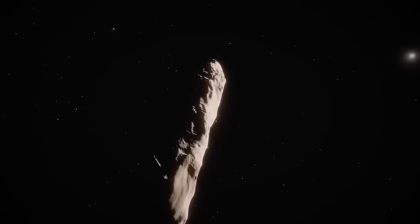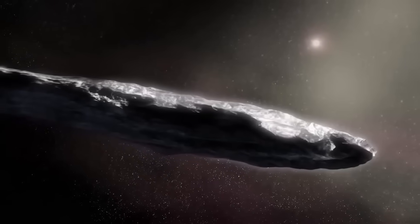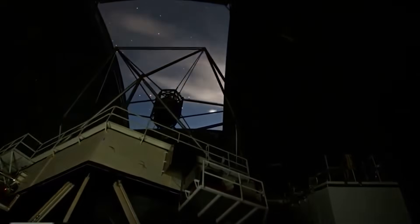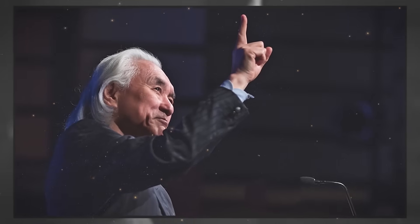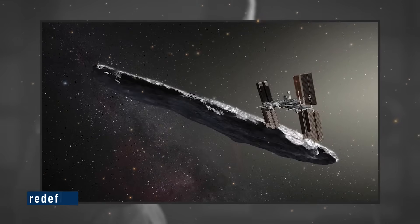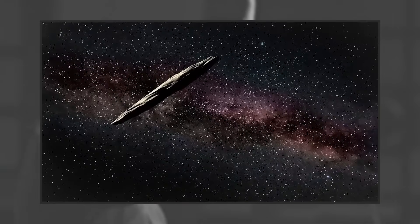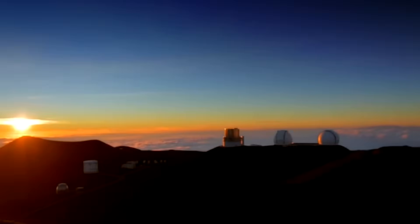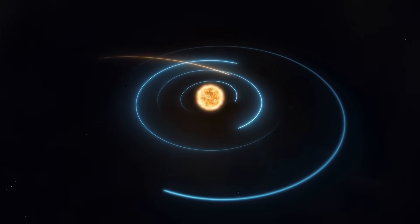Even in its silence, 3i/ATLAS leaves clues. About where it came from. About what formed it. About how small our knowledge still is. Soon, it will pass Mars, fade into the distance, and vanish into interstellar dark. But its memory will remain. In archives. In data models. In headlines. In astronomy, every blur is a signal. And sometimes, the hardest objects to define are the ones that redefine what we think we know. 3i/ATLAS will soon vanish forever. But its blurred image leaves behind more questions than answers. Did a Chinese observatory reveal what NASA wouldn't? Or is the truth simply buried in silence? In the race to understand interstellar visitors, maybe what we aren't told is just as important as what we see.